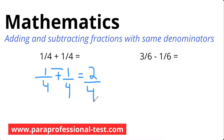Now in step 3, it says to simplify the fraction. In order to simplify, I ask myself which number goes into both the top and the bottom. In this example, 2 goes into both 2 and 4, so that leaves us with 1 half. I write equals, put a 1 on the top and a 2 on the bottom, which equals 1 half. Let's go on to our next problem.